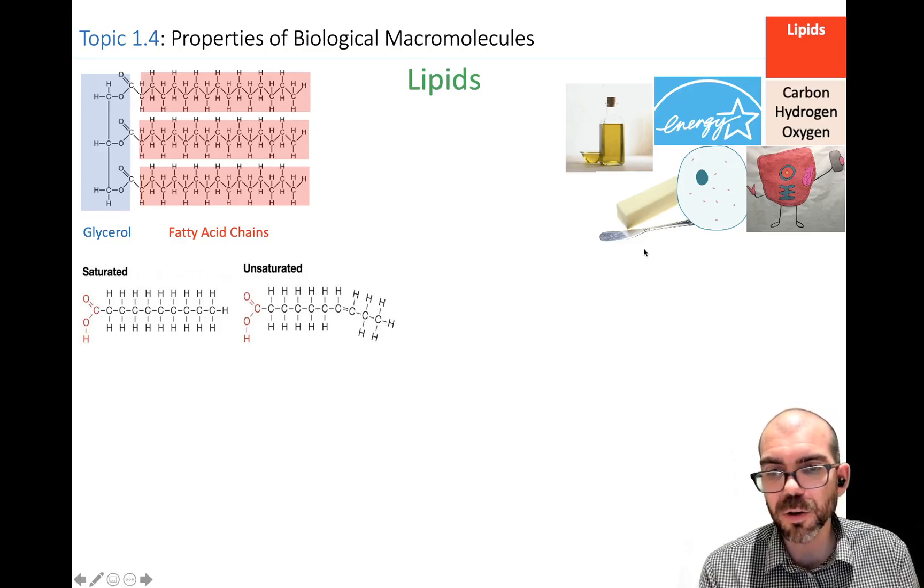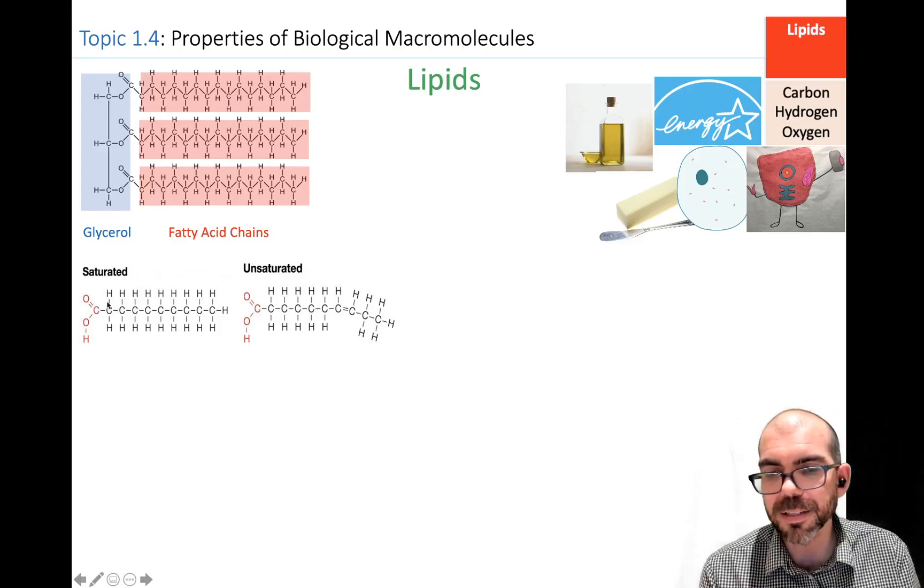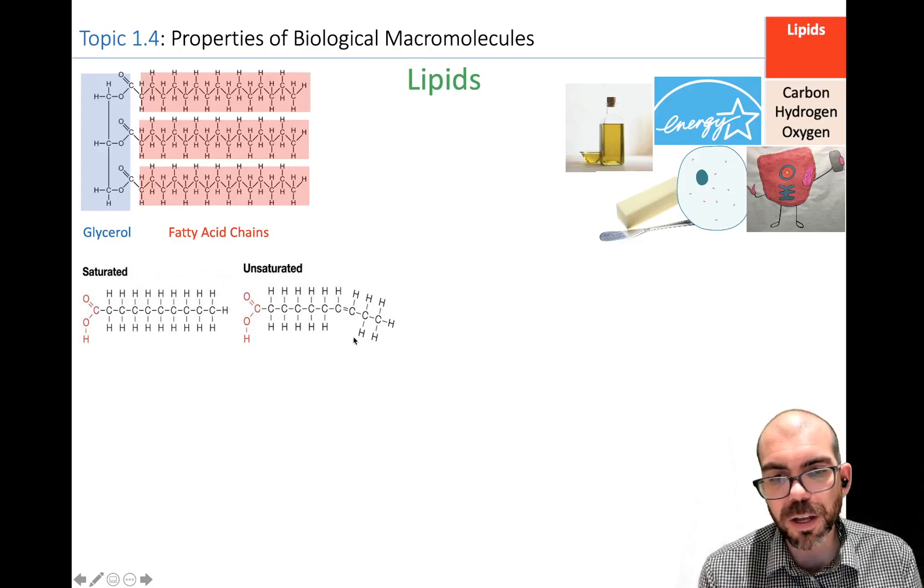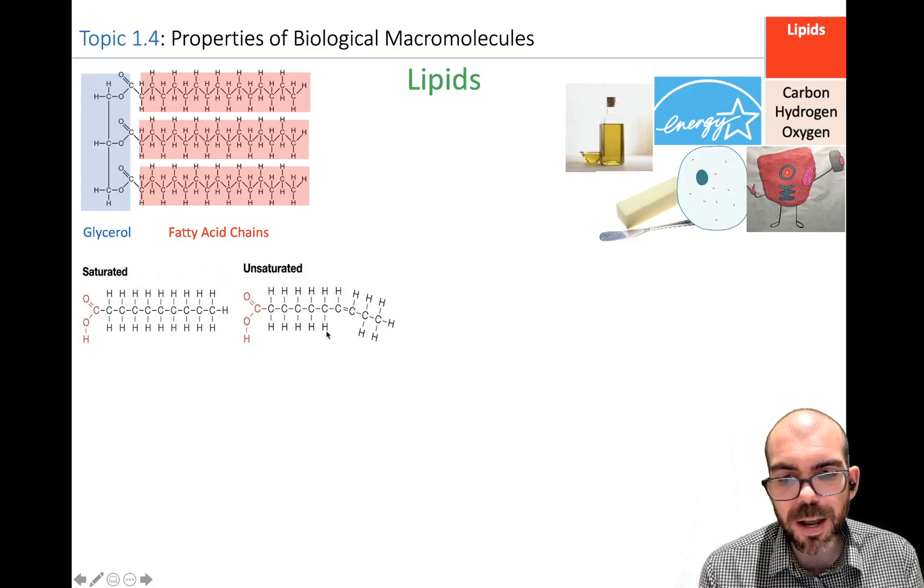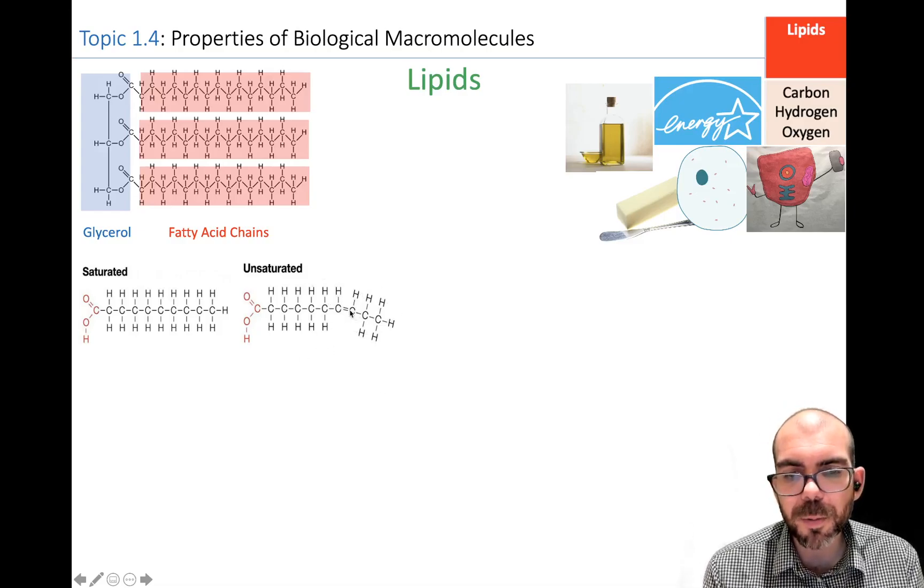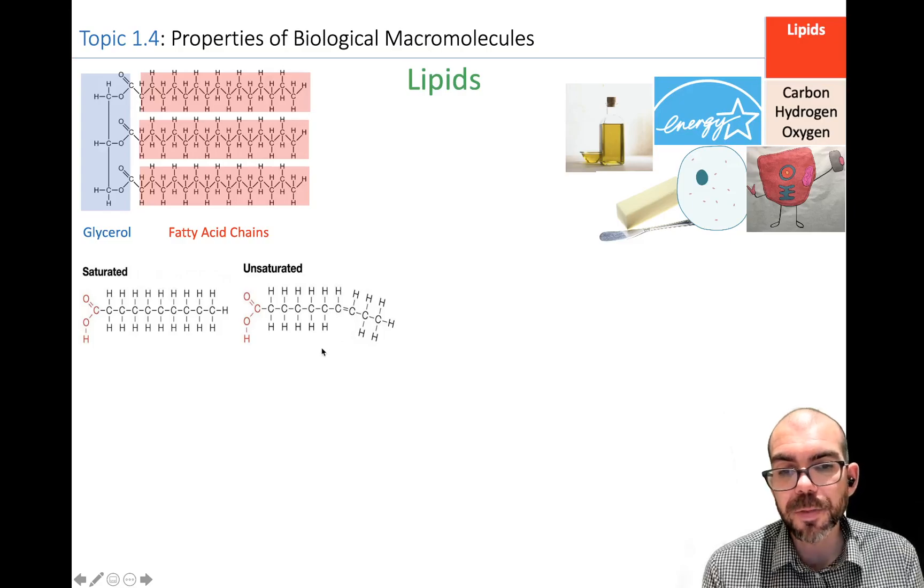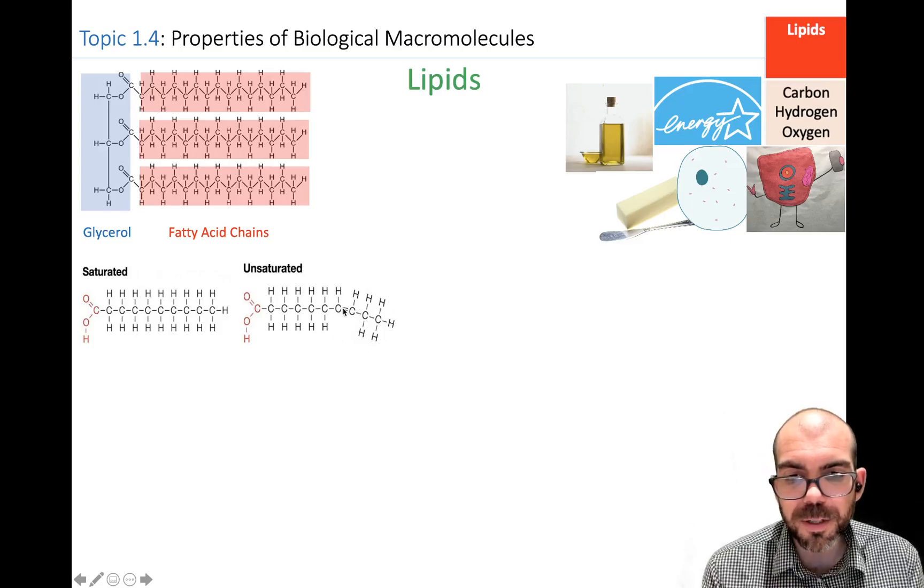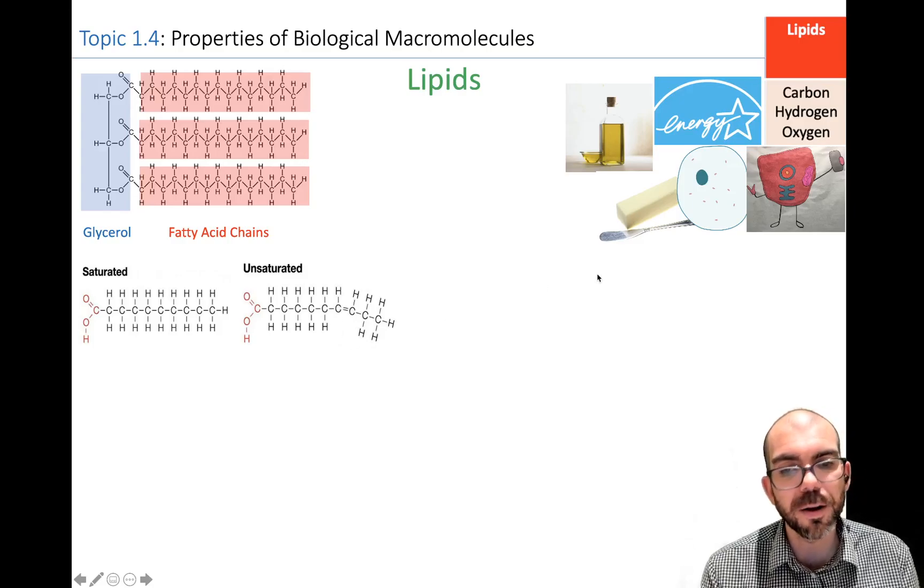Those fatty acid chains can come in two varieties. They can be either saturated. You can see here every carbon is completely saturated by a hydrogen bond. Or they can be what we call unsaturated, where there is a breakage in that saturation by hydrogens. What causes this? This carbon-carbon double bond here. Nothing is necessarily broken off. But because of that carbon-carbon double bond, there are less hydrogens surrounding it.